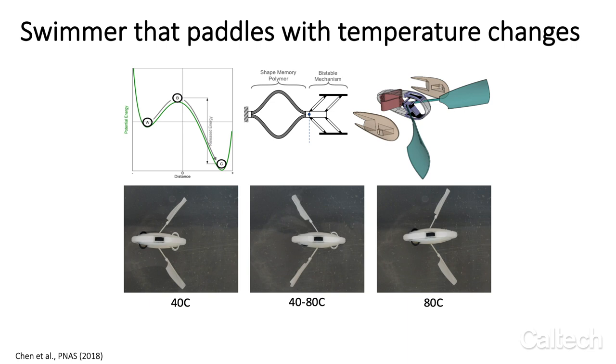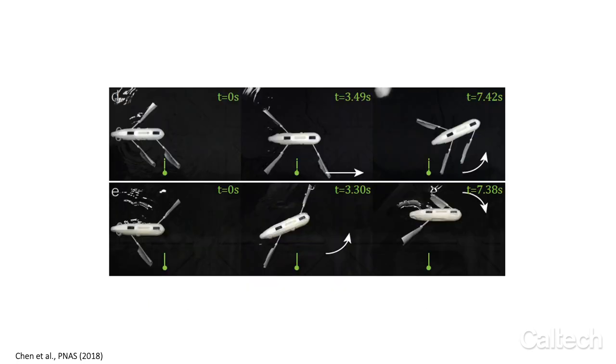We 3D print without assembly floaters with snapping paddles which are triggered by changes in temperature in the water. We can choose the distribution of materials so that the swimmers can move forward or backward or up or down. Here the changes of directions can be obtained by removing some of the paddles in selected locations.